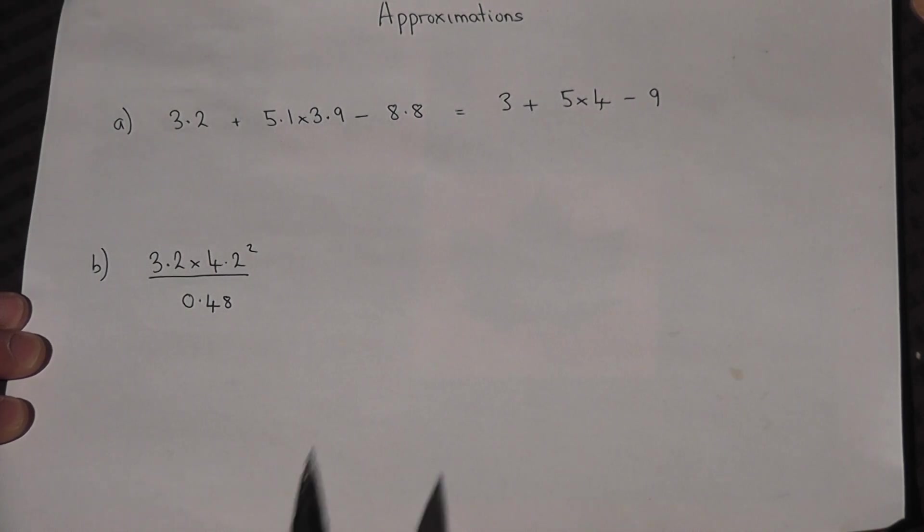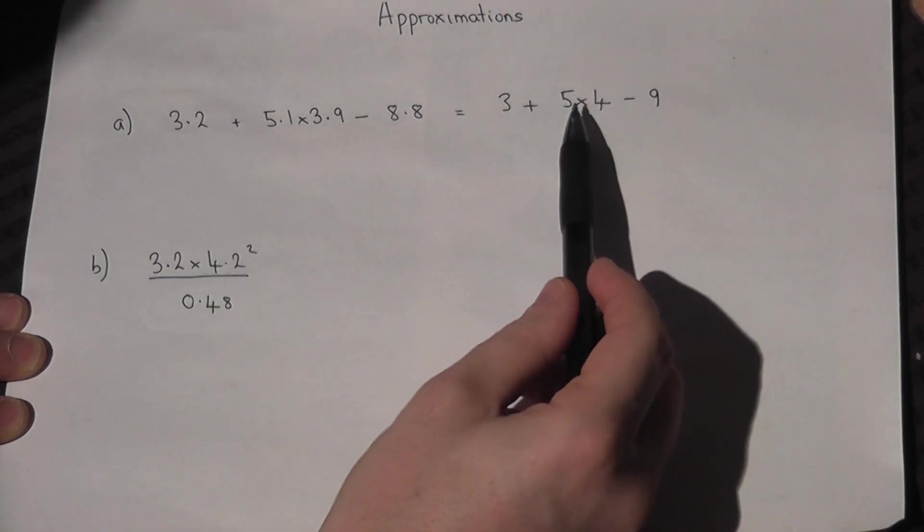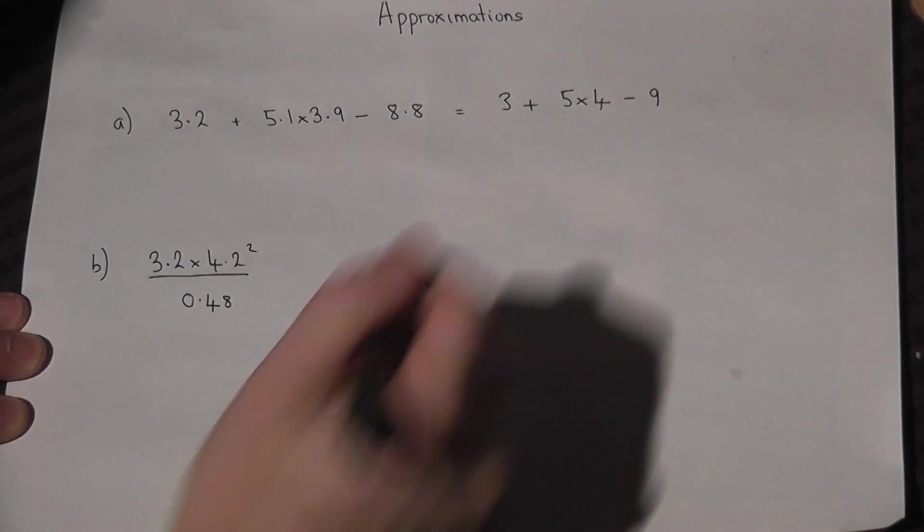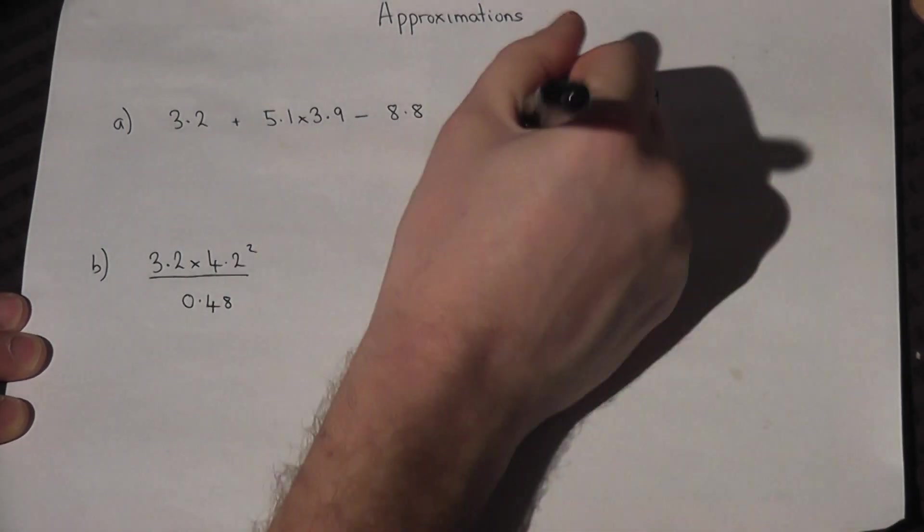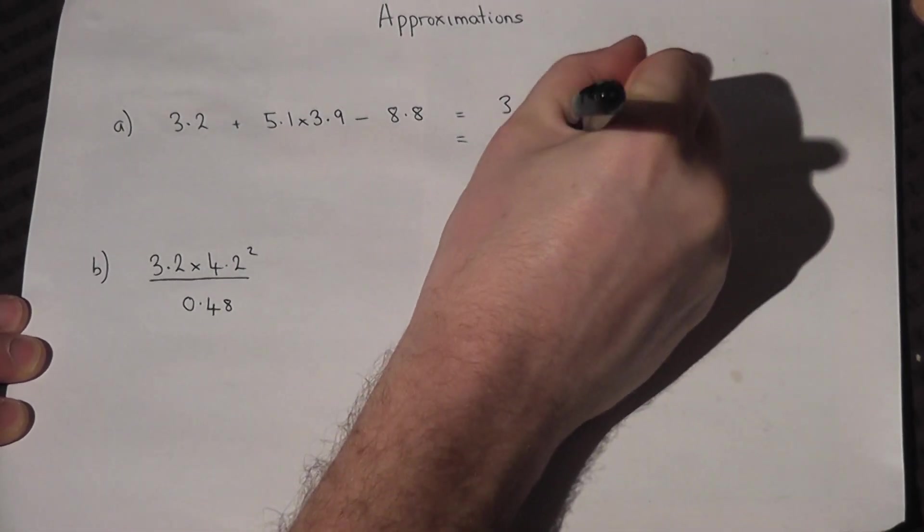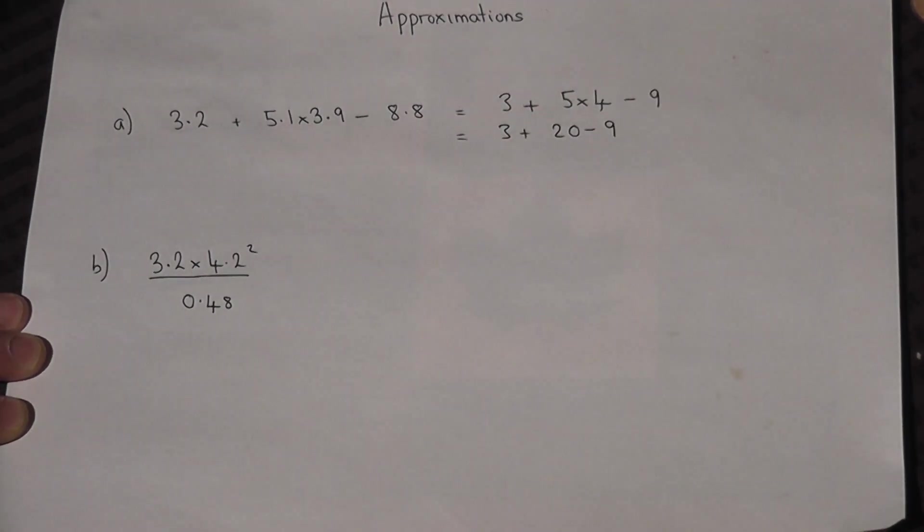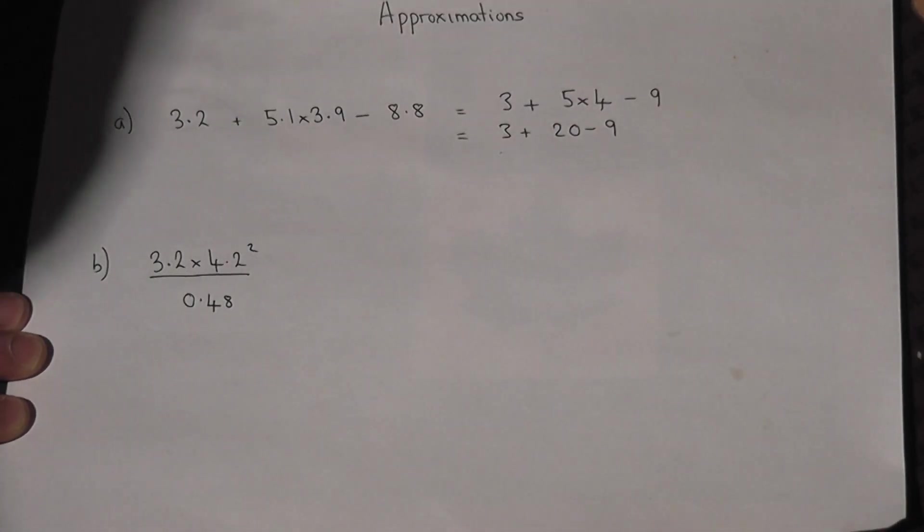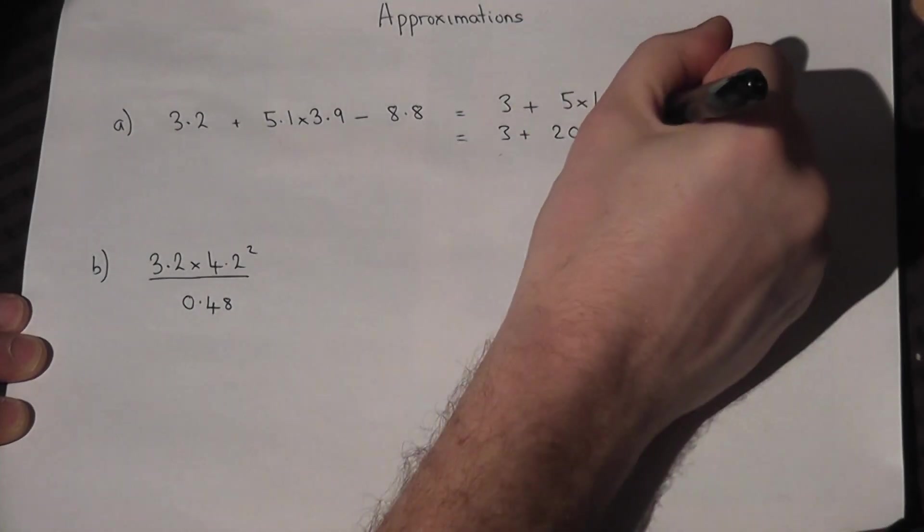The next mark is to then work out that actual calculation. Now don't forget we always times before we add or subtract. So we do 5 times 4 first. That's 20. And then 3 plus 20 is 23. Take away 9 is 14.